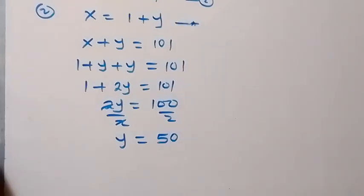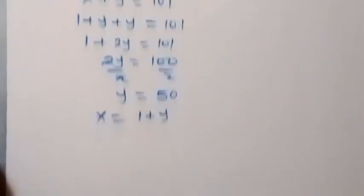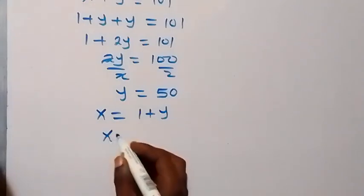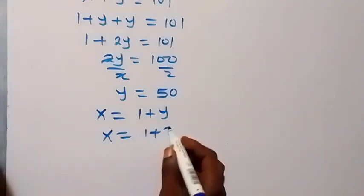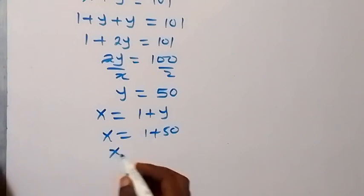From this equation, we can find x. So x = 1 + y, and y is 50. That means x = 1 + 50, so x = 51.